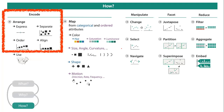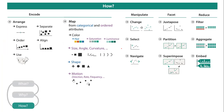For arranging tables, express values using separate, order, align, regions. Axis orientation covers rectilinear, parallel, and radial, plus layout density. For the how — under the arrange segment, we express, separate, order, align. For mapping from categorical and ordered attributes, we use color (hue, saturation, luminance), size, angle, curvature, shape, and motion. For manipulate: change, select, or navigate. For facet: juxtapose, partition, superimpose. For reduce: filter, aggregate, embed.